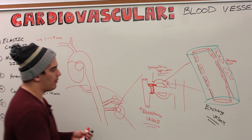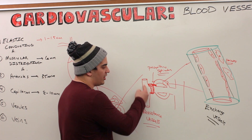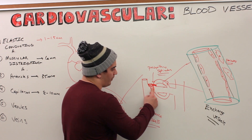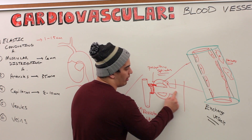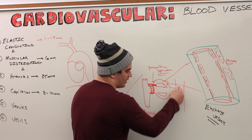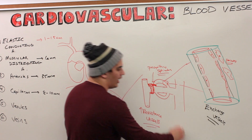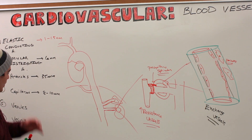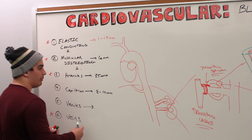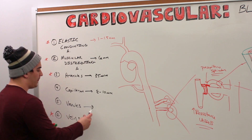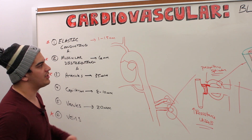Venules won't be covered in detail here since we'll address them in microcirculation. The terminal arteriole leads into the meta-arteriole, which connects to the capillary bed. The end of the capillary bed drains into the post-capillary venule, which then forms larger venules. Their diameter is about 20 micrometers.